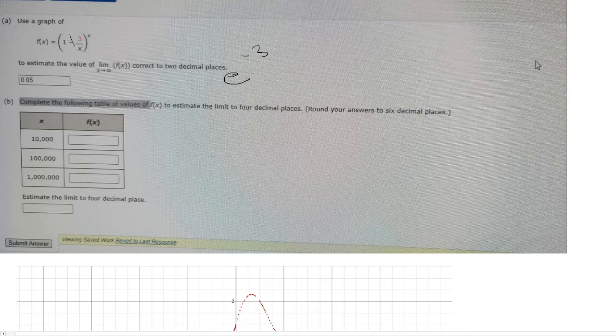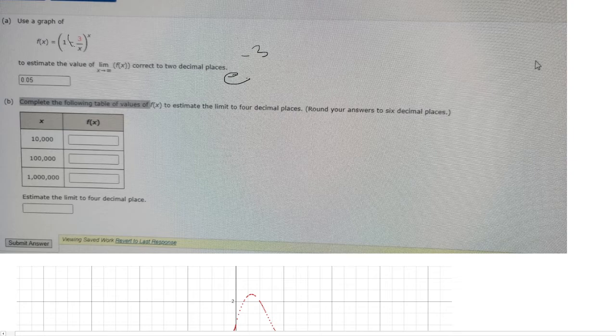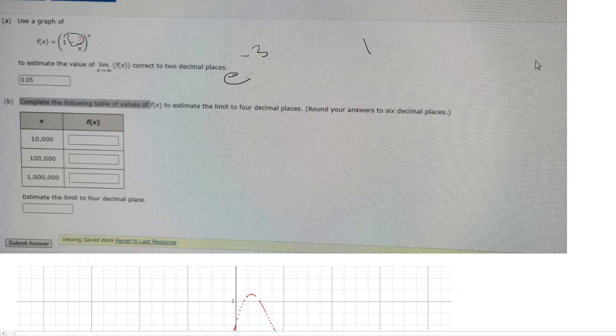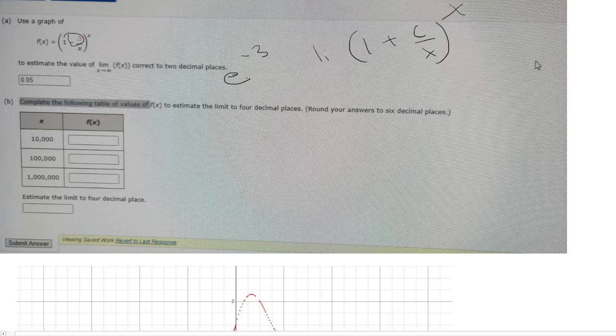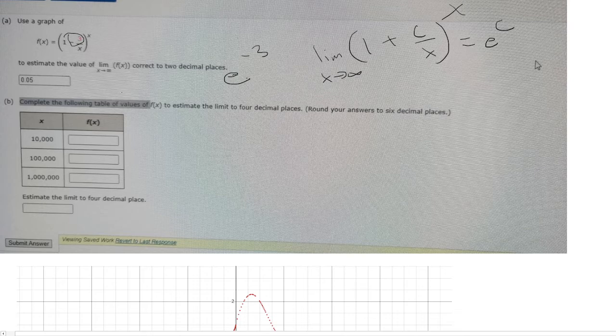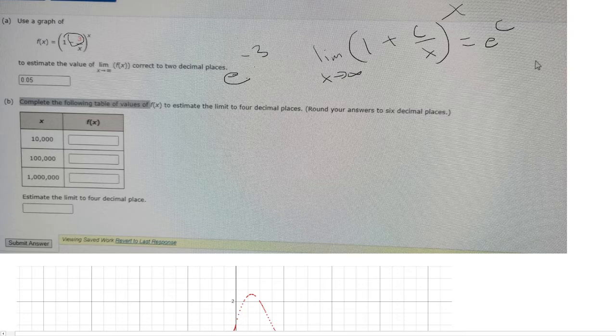Whatever this value is right here, including the sign, that's the exponent. So in general, if I had (1 plus c/x) to the x power, this limit as x approaches infinity would just be e to the c. But here, c is negative 3, so that's why we say it's e to the negative 3rd power.